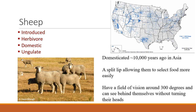Sheep are also domestic livestock that were introduced — they evolved in Asia and were introduced to the U.S. They're found largely in the West and in Texas. They're interesting because they have a split lip, unlike cattle, which makes them more selective in their feeding. Because they're a prey animal, they also need to see all around them, and they can see nearly 300 degrees around their head without turning it.